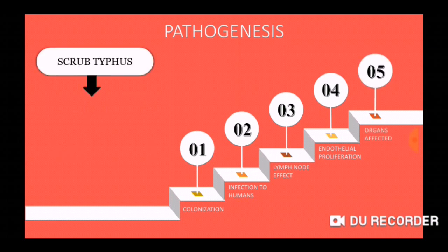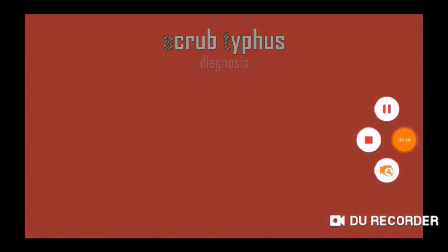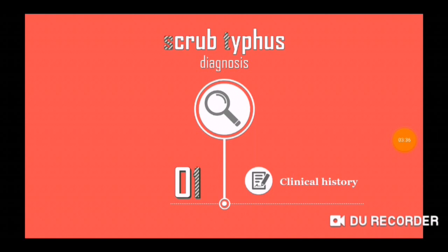The major organs affected by scrub typhus include the cardiovascular system and the lungs, resulting in complications like cardiovascular dysfunction and pneumonia. Scrub typhus is mainly diagnosed on the basis of clinical history, the presence of a bite mark on the body, maculopapular rashes all over the body, and feverish symptoms. Serological examination for the presence of the organism is done through PCR.